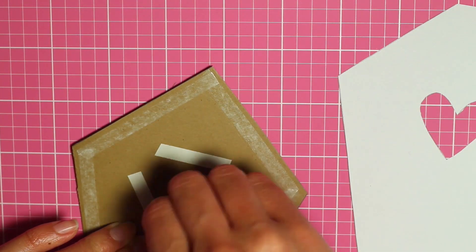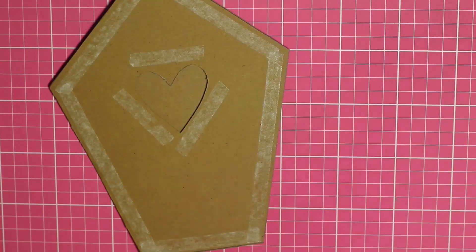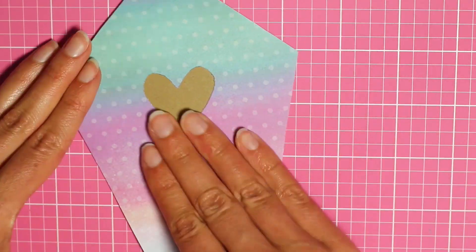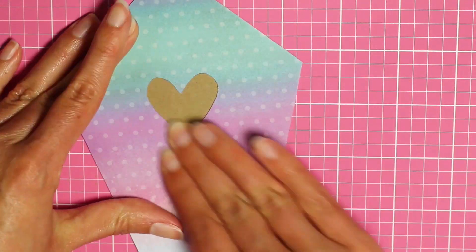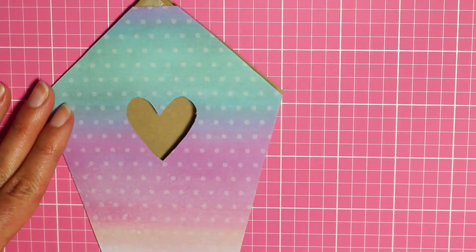And I also put some around the heart just to make sure that the paper stays attached. Then carefully stick the pattern paper in place. So it looked like this.